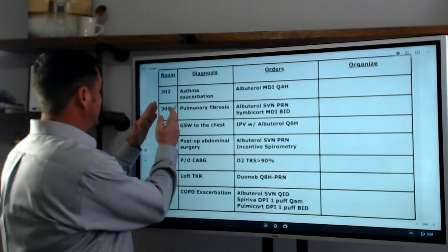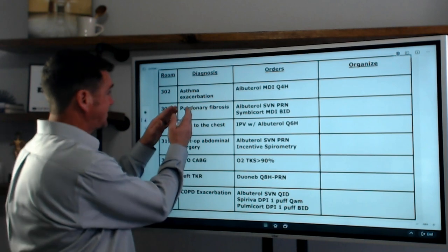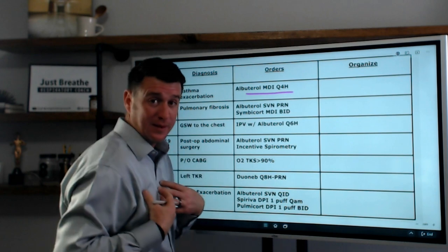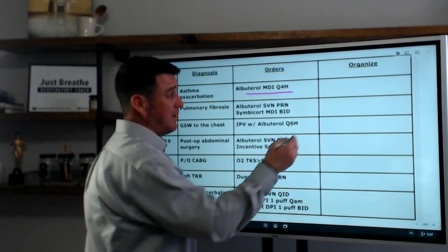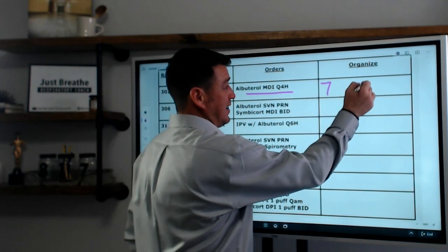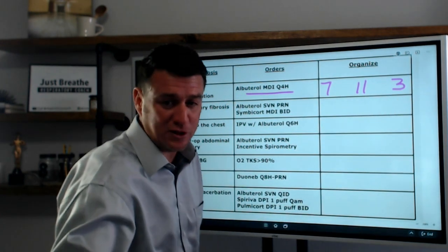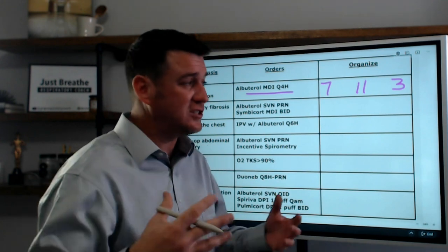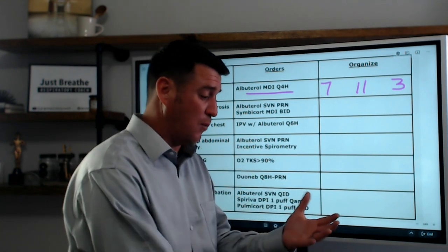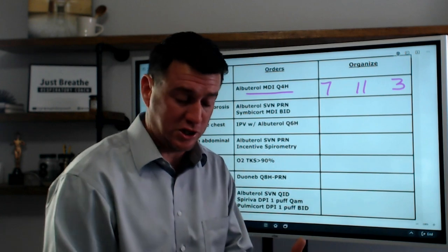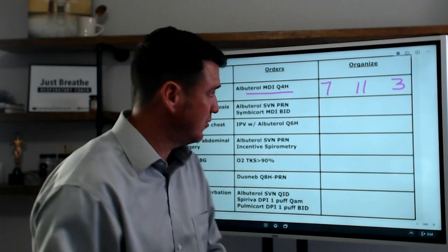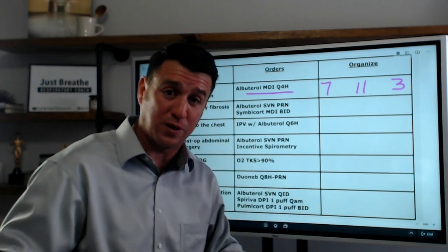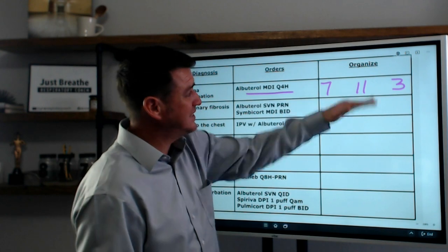The first patient is an asthma exacerbation patient with an albuterol MDI Q4 hours. I'm going to put this on my sheet at 7, 11, and 3. That doesn't mean those treatments happen exactly at those times — it just means I need to see this patient in the morning, around lunch, and again later in the afternoon.